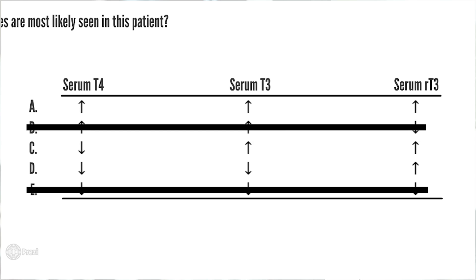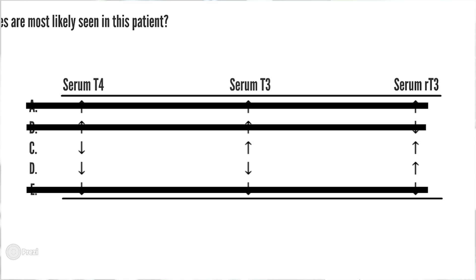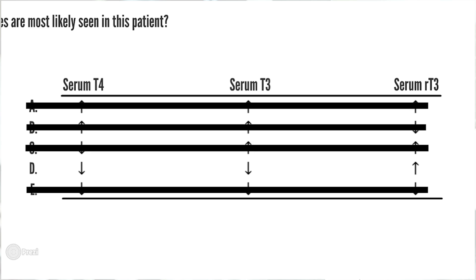Now, for the other columns, we know that T4 and T3 actually decrease in euthyroid sick syndrome. Going through the first column, we can eliminate A, and going through the second column, we can eliminate C. So you're left with D, and the correct answer is D. I hope this was helpful. Thanks for watching.